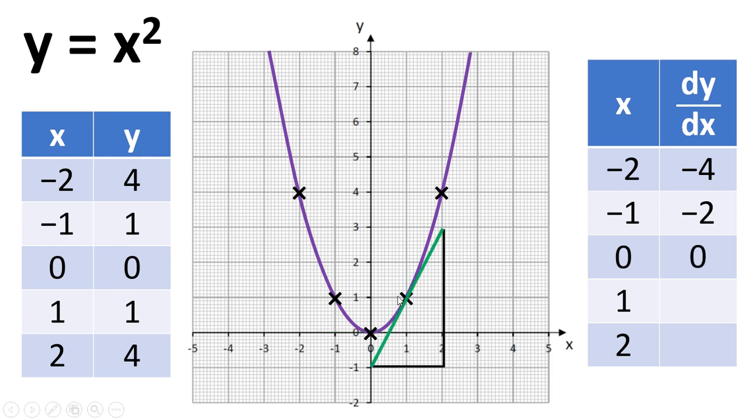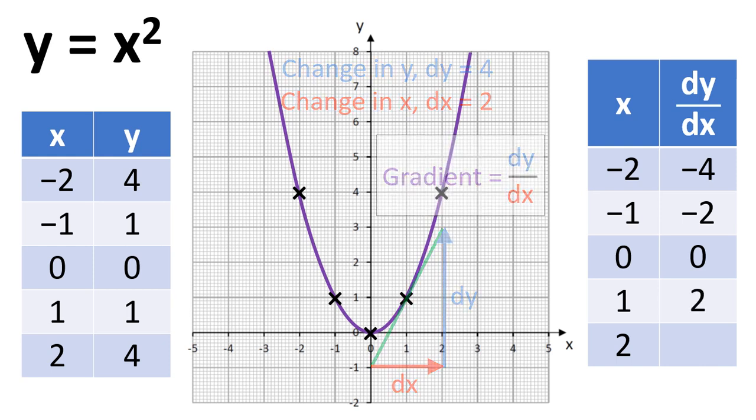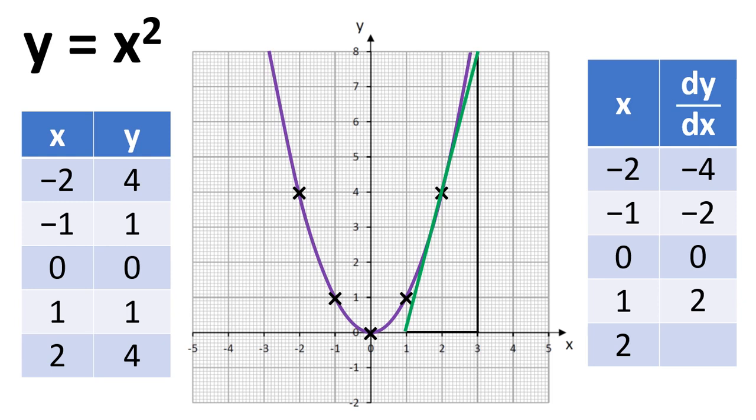Moving on to x equals one, if we draw the tangent through that point, we get a dy of four, a dx of two, giving us a gradient of two. And finally, when x equals two, we get a gradient of four.